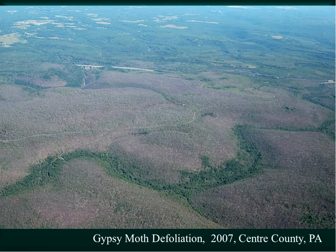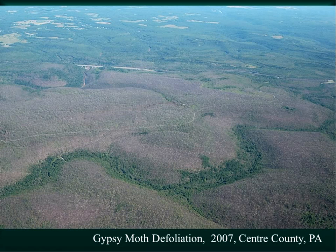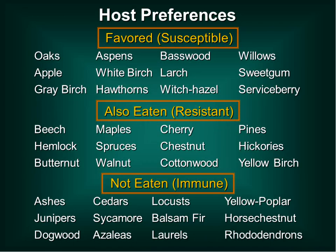A characteristic thing about gypsy moth outbreaks is that they tend to be very much a regional phenomenon — they are synchronized over a very large area. In big outbreak years, defoliation extends for hundreds of kilometers, which is really why gypsy moth is so much of a problem. Getting back to biology: gypsy moth is a polyphagous insect, feeding on literally hundreds of tree species, but it favors some more than others. In northeastern North America, oaks — genus Quercus — have always been the most fed-upon species, with aspens and other species also being really good gypsy moth hosts.